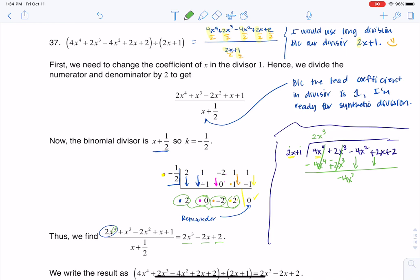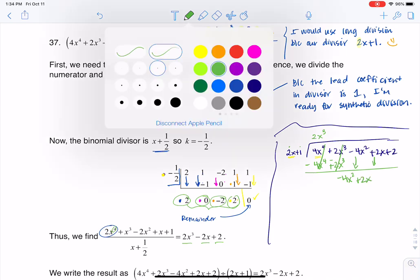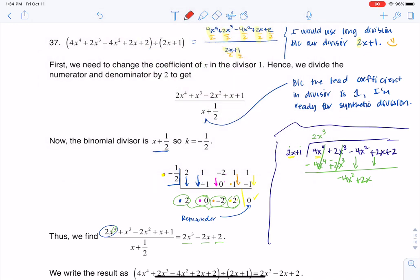So I've got negative 4x squared plus 2x. Let me change colors one more time. I will go to red. Now what do I need to multiply 2x by to get to negative 4x squared? Well, that's going to be, let's see, negative 2x.